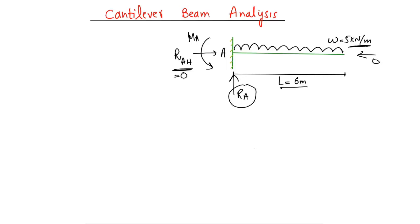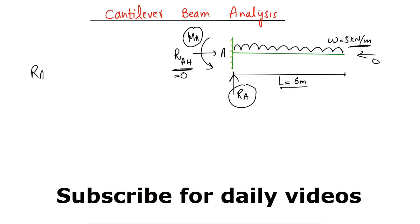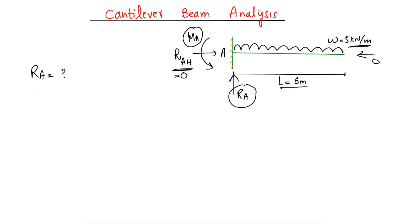So now we only need to find RA and the moment MA at point A. To find RA, we simply multiply the load intensity by the length: RA = w × L = 5 kN/m × 6 m = 30 kilonewtons. So the support reaction RA equals 30 kilonewtons.